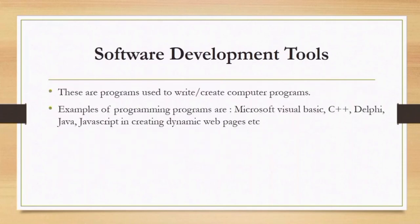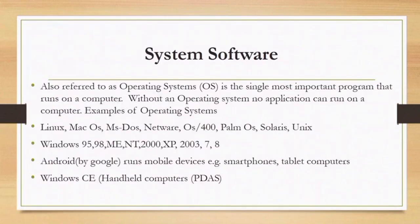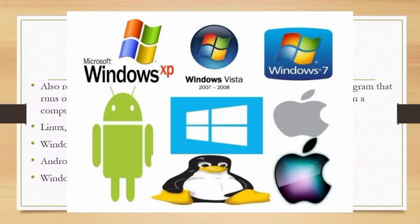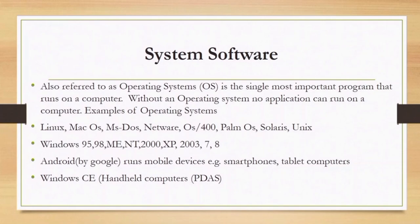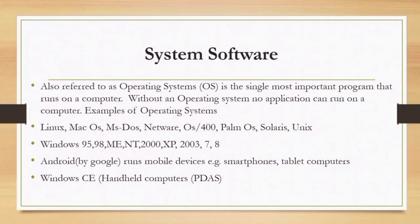Software development tools are the software used by programmers to design those application software programs. System software, also known as the operating system, consists of programs that run other software. It is the most important program that runs on a computer — without an OS, no application can run. Examples of operating systems include Android, Windows, Linux, Mac OS, MS-DOS, Network OS, OS/400, Unix, and others.